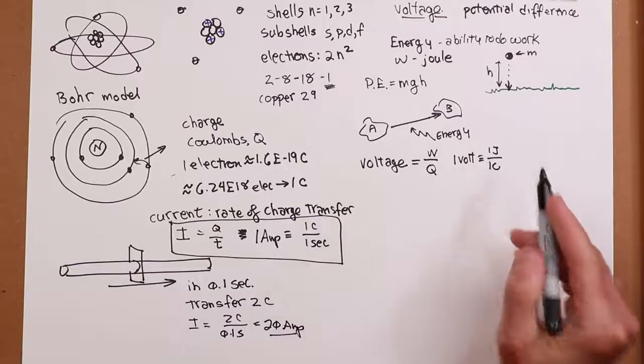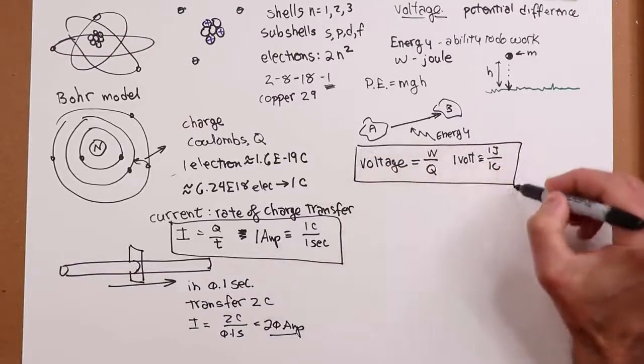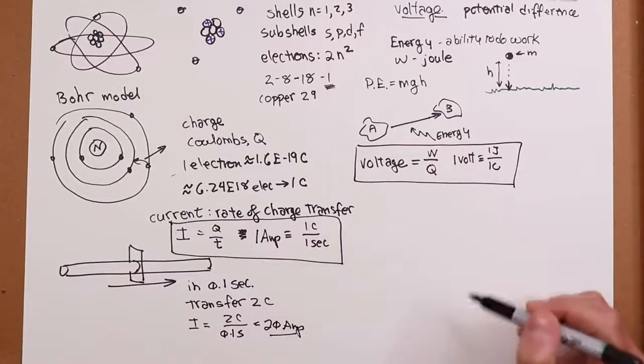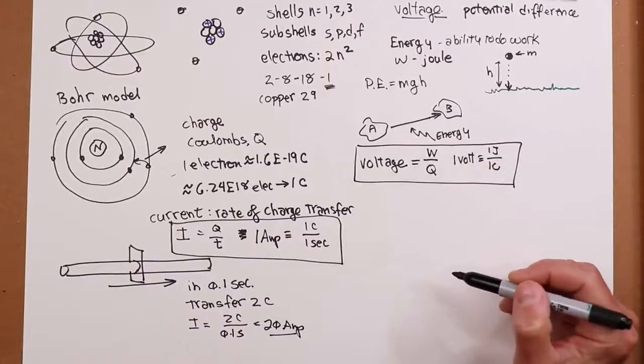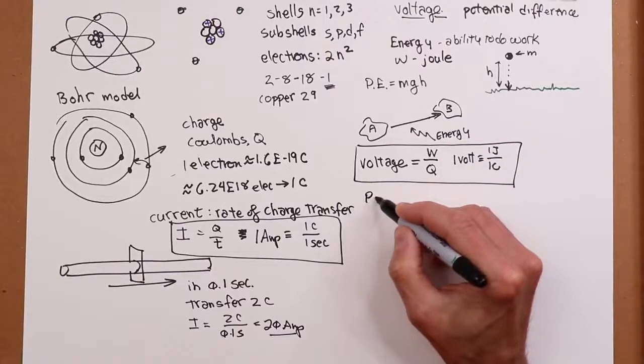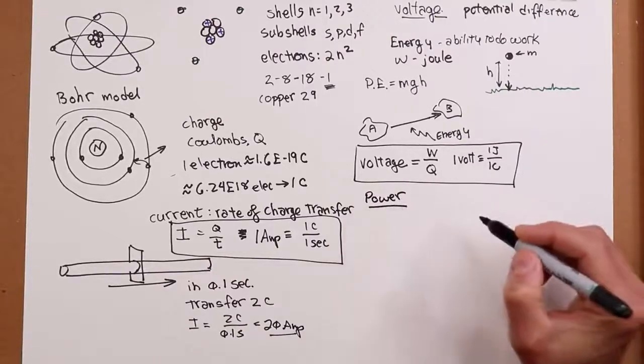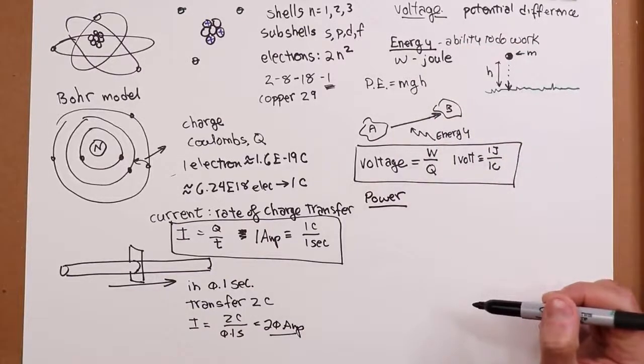All right. Okay. So those two things work together. We've got our current, and we've got our voltage. Now, continuing. Power. This is a fun word. I like this word. A lot of people confuse power and energy. They're related, but they're not the same thing. Power is the rate of energy usage.